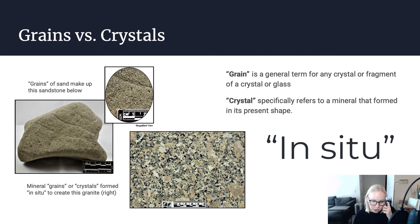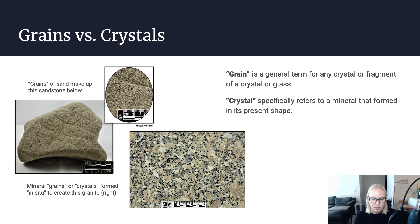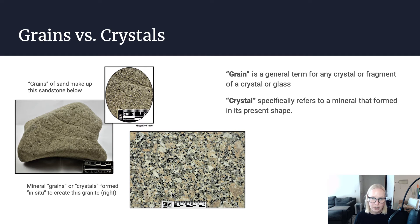You can also use the term grain to describe mineral grains or pieces of minerals that are in place, or in situ. The term in situ is of Latin origin and it means in place. It's a word that geologists frequently use to describe a rock or mineral that is in its original place. So these minerals here in this granite, they formed where they are now — they formed together in that orientation and haven't moved relative to one another. So the term grain is more general; you can use it for grains of sand in a sandstone as well as grains of minerals within an igneous rock. The word crystal, on the other hand, is more specific and refers to a mineral that formed in its present shape — it hasn't experienced any weathering or been ground up over time and repurposed into a new rock.